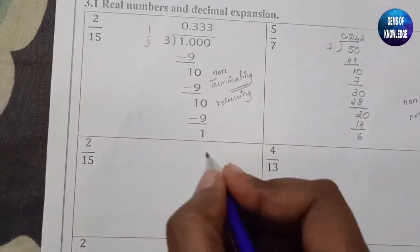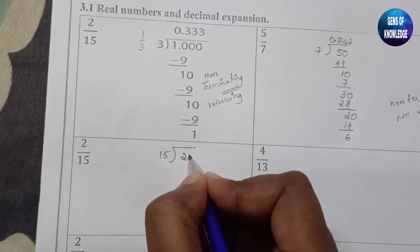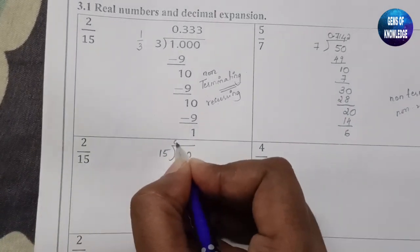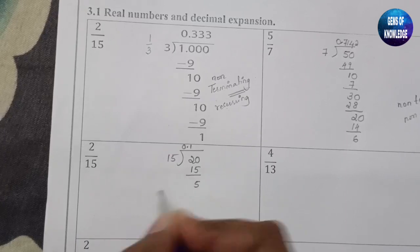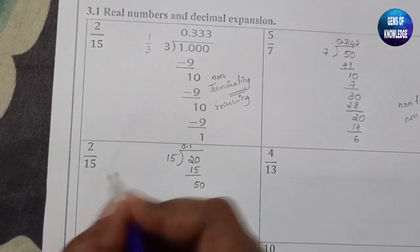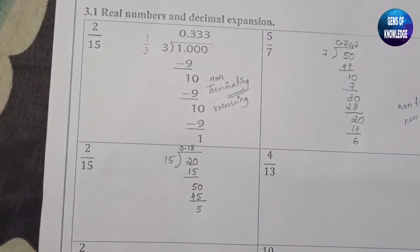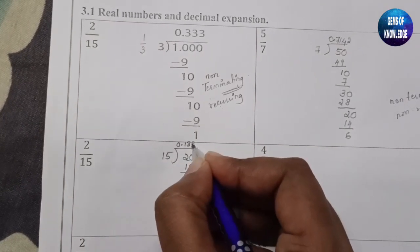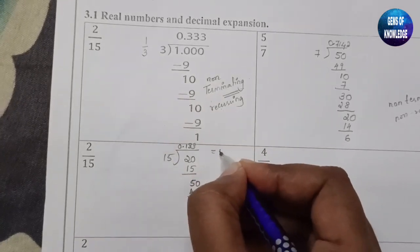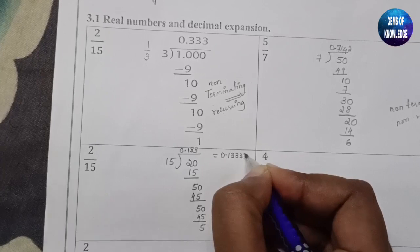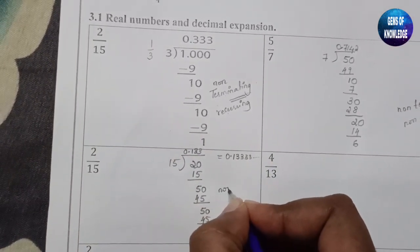Let's move on to 2 by 15. You cannot divide directly, so put a 0 and a point. 15 ones are 15, remainder 5. Take another 0 — 15 threes are 45, remainder 5 again. Take another 0 — 15 threes are 45, the same remainder repeats. So you get 0.1333... and the 3 keeps repeating. This is non-terminating recurring.